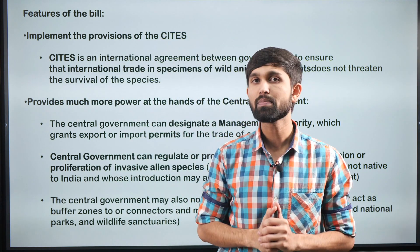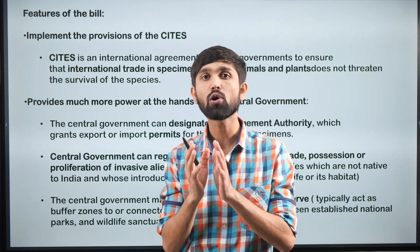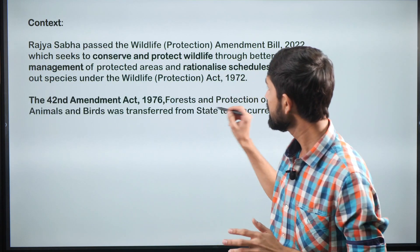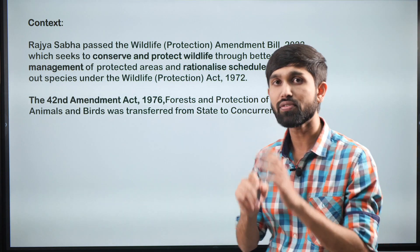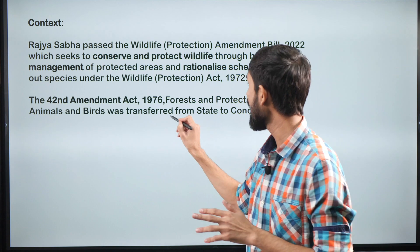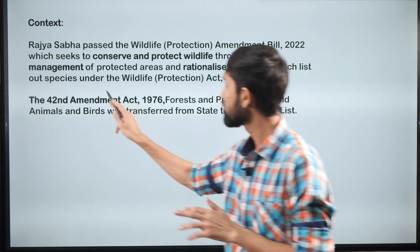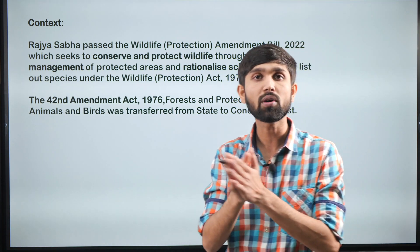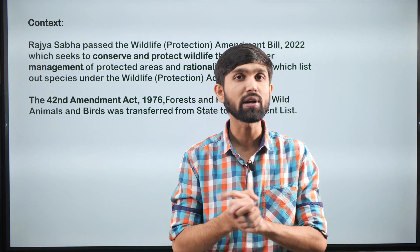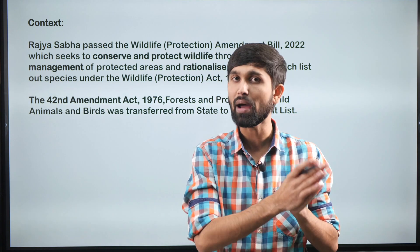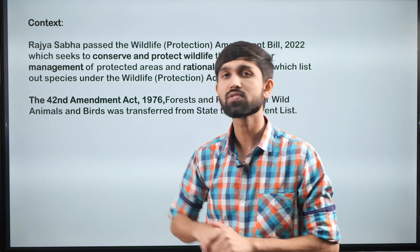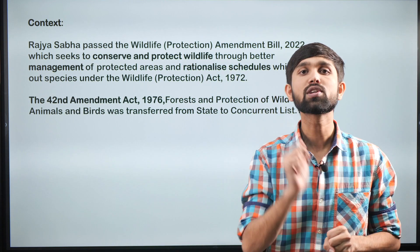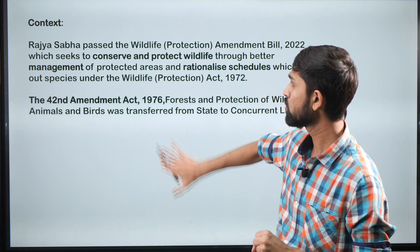One important aspect to note before starting is that earlier forest and protection of wildlife came under the State List. But this was changed and added into the Concurrent List from the 42nd Amendment Act in 1976. This paved the way for the Wildlife Protection Act, which is a national parliamentary legislation that conserves animal species and talks about protected areas.